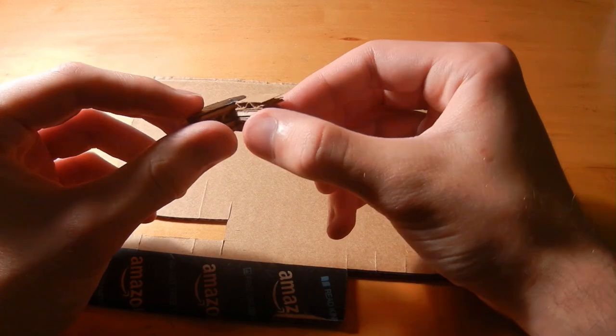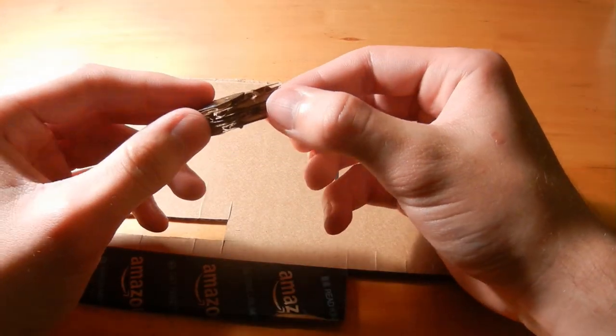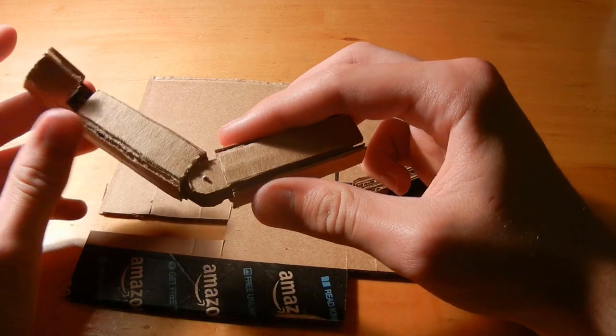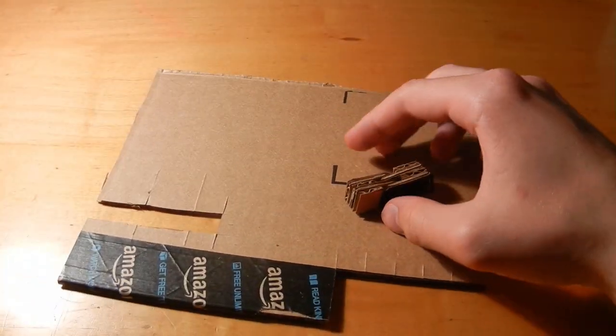Alright so there you go. Now the hinge is done. And some of my other pieces I mounted them inside of these cardboard tubes for your arms and stuff like that. So that's one thing you can do with them.